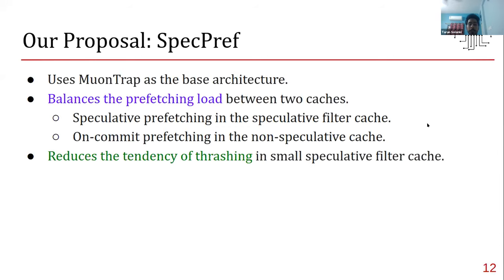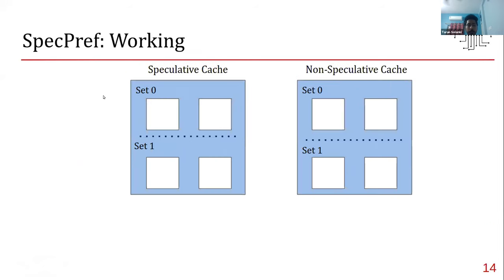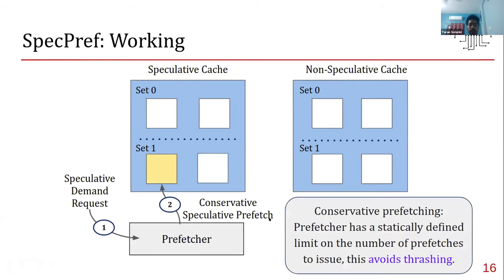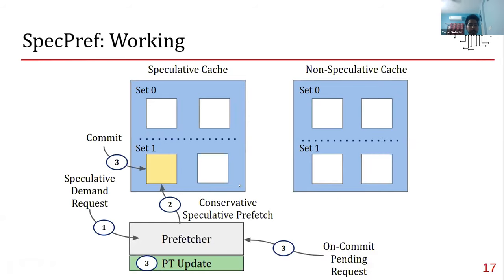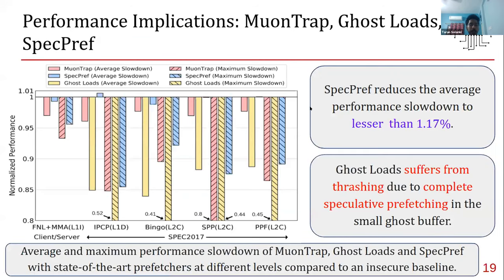Our approach, SpecPref, uses MuonTrap as the base architecture. We balance the prefetching load between the two caches: speculative prefetching is done in the speculative filter cache, and on-commit prefetching is done in the non-speculative cache, reducing thrashing in the small speculative filter cache. We also add a speculative prefetch cache probed concurrently with L2. In the workflow: a speculative demand request triggers conservative speculative prefetching (with a static limit on prefetch count) into the speculative cache; on instruction commit, the prefetcher table is updated and on-commit pending requests are issued directly to the non-speculative cache.